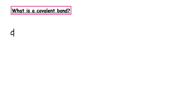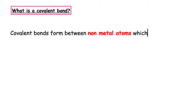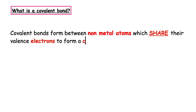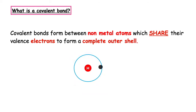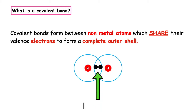We should already know from lessons 1 and 2 what a covalent bond is. Covalent bonds form between non-metal atoms which share their valence electrons to form a complete outer shell. What we can see from the covalent sharing diagram is in the overlap between the orbitals, we have a pair of shared electrons — that is known as a covalent bond.